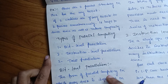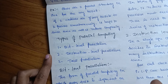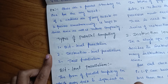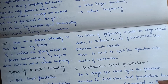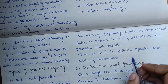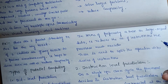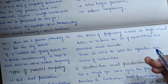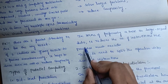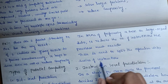Bit-level parallelism is a form of parallel computing in which every task is dependent on processor word size. In terms of performing a task on large-size data, it reduces the number of instructions the processor must execute. There is no need to split the operation into a series of instructions.